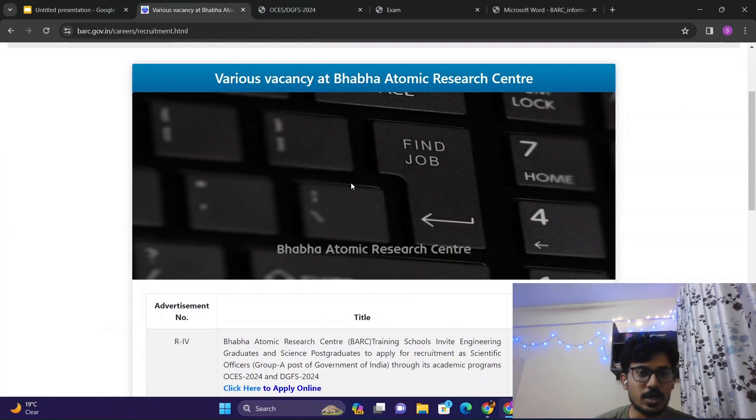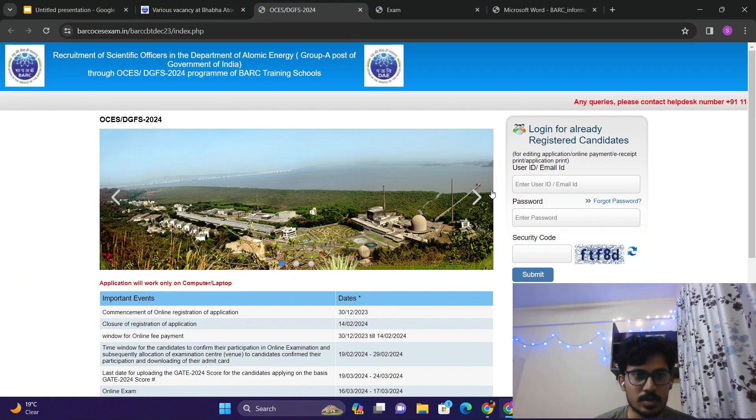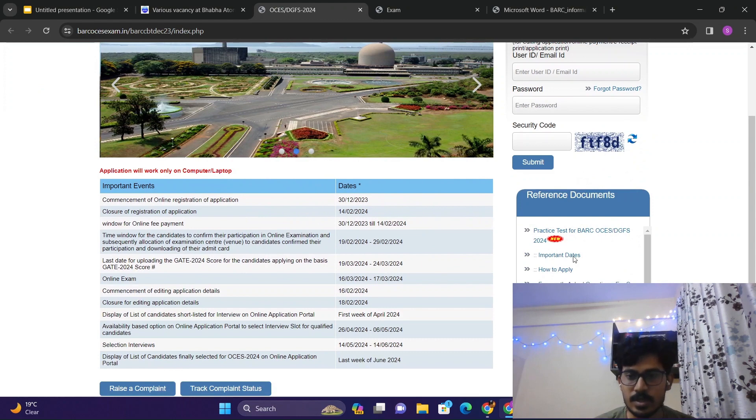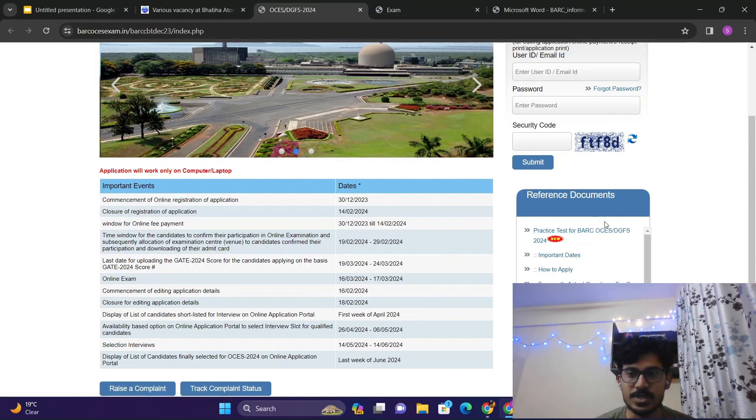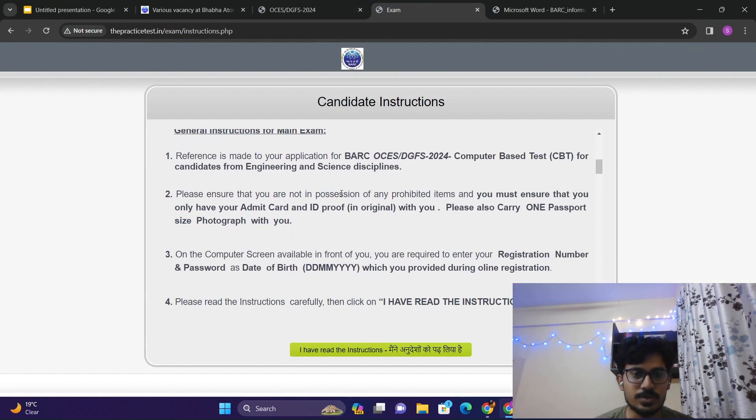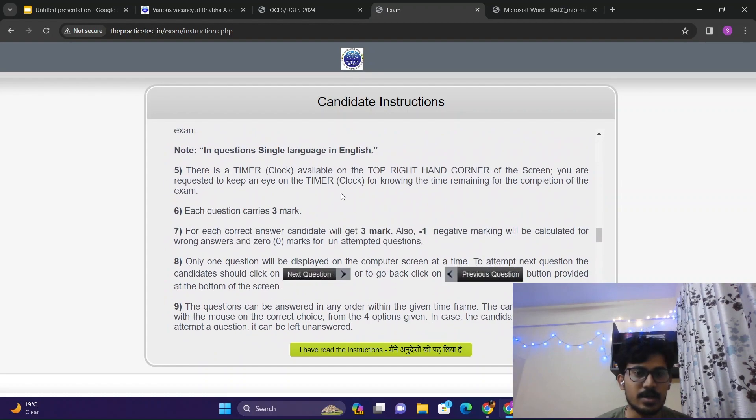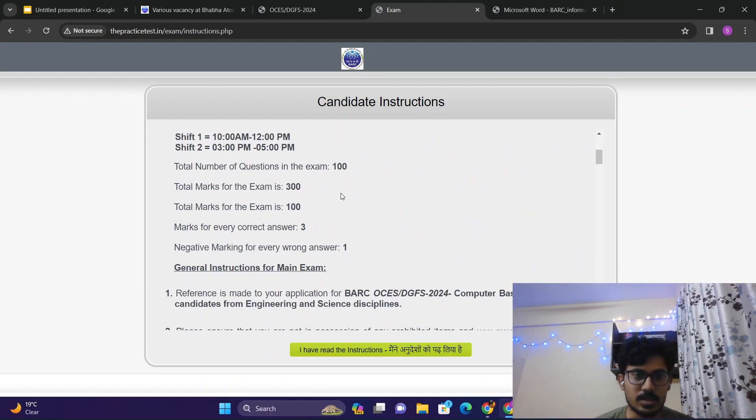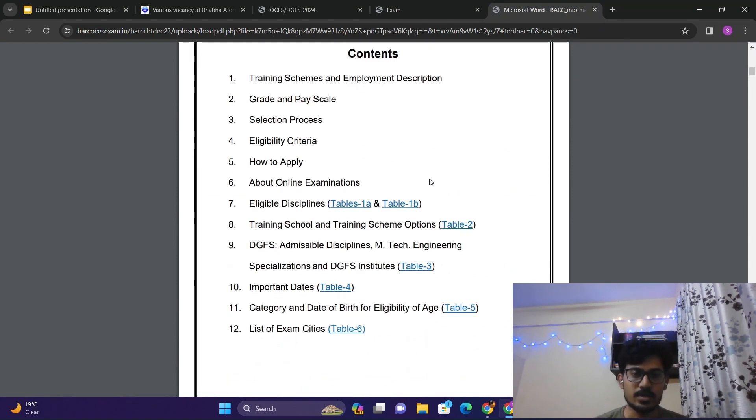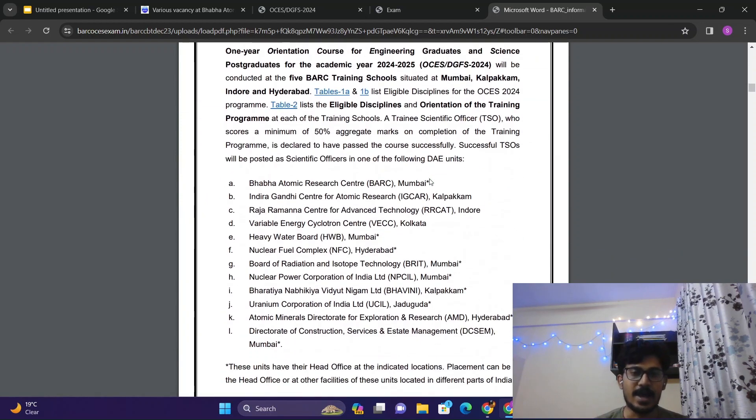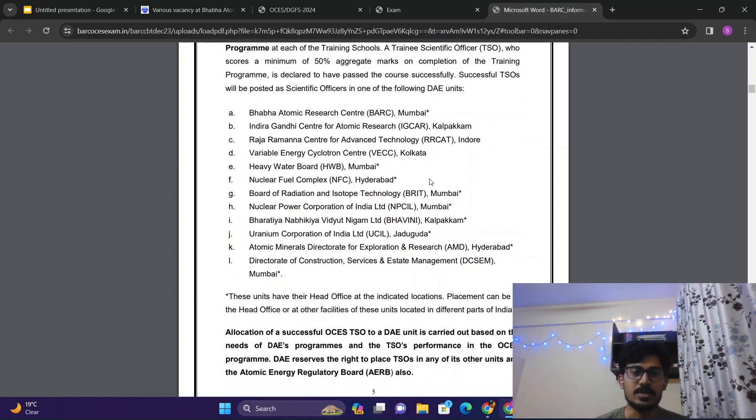This is the official website of the career page of the BARC and this is where all these links and dates are coming. Please follow these pages properly and this is the practice test for the BARC OCES and DGFS. You can just hover through this and you will get to know how the exam will be, and you will get an idea of all these instructions to read before the actual exam. So you will not be panicked in the actual exam. This is the exam procedure, please read this carefully. I think you all have read this document, the eligibility criteria, the exam pattern, and the negative marks. I will discuss all these and then how to prepare for this exam with only one month left.